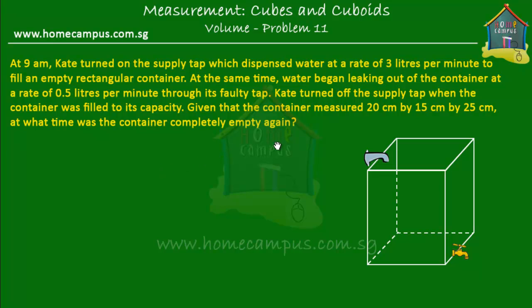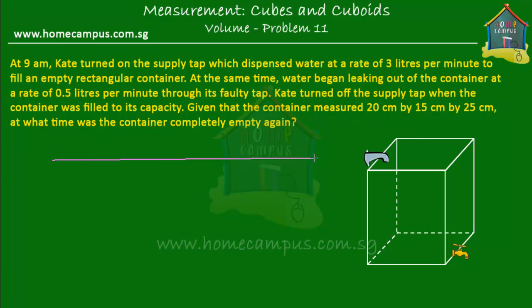Now this is quite a mouthful but trust me it's not very difficult at all. Here is the empty rectangular container — this is the supply tap and this is the faulty tap. Here is what is happening. Let me make a timeline here — this is the sequence of events.